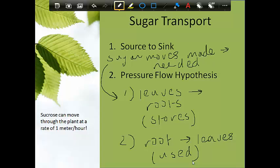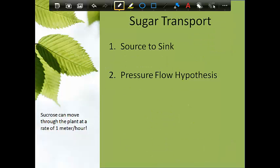That's one of the main ideas: it's going to be moving from where it's made, or we could also say where it's stored, so where the most sugar is. If it's being stored in the roots or it's being made in the leaves, it's going to move from that area to wherever it's needed. That's the source to sink idea.